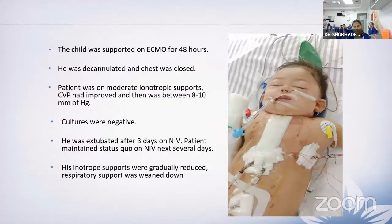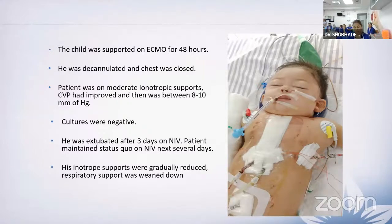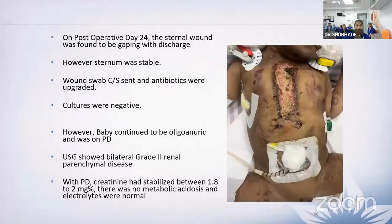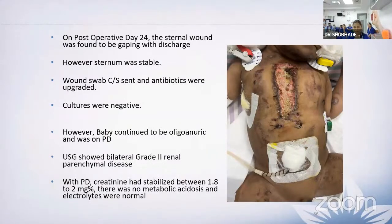The child was supported on ECMO for 48 hours, then decannulated and the chest was closed. On moderate inotropic support, CVP improved to 8 to 10 mmHg. Cultures were negative. Patient was extubated after three days to NIV, maintained on NIV for several days, and inotrope and respiratory supports were gradually weaned. On post-operative day 24, the sternal wound was found to be gaping with discharge but with a stable sternum. Wound swab cultures were sent and antibiotics upgraded. The baby remained oligo-anuric and continued peritoneal dialysis. USG showed bilateral grade 2 renal parenchymal disease. With peritoneal dialysis, creatinine stabilized between 1.8 to 2 mg% with no metabolic acidosis and normal electrolytes.